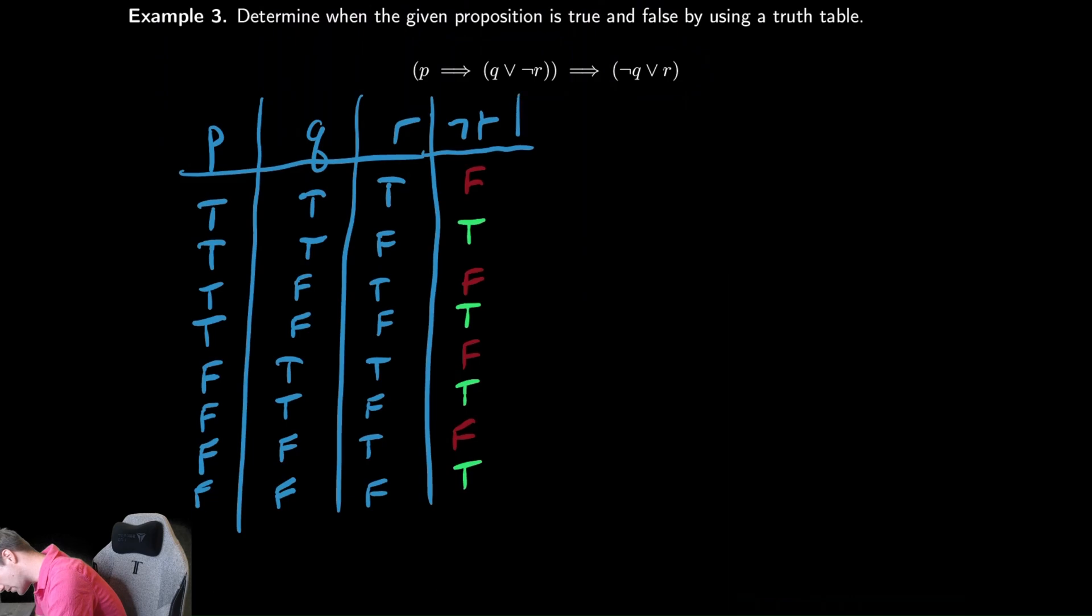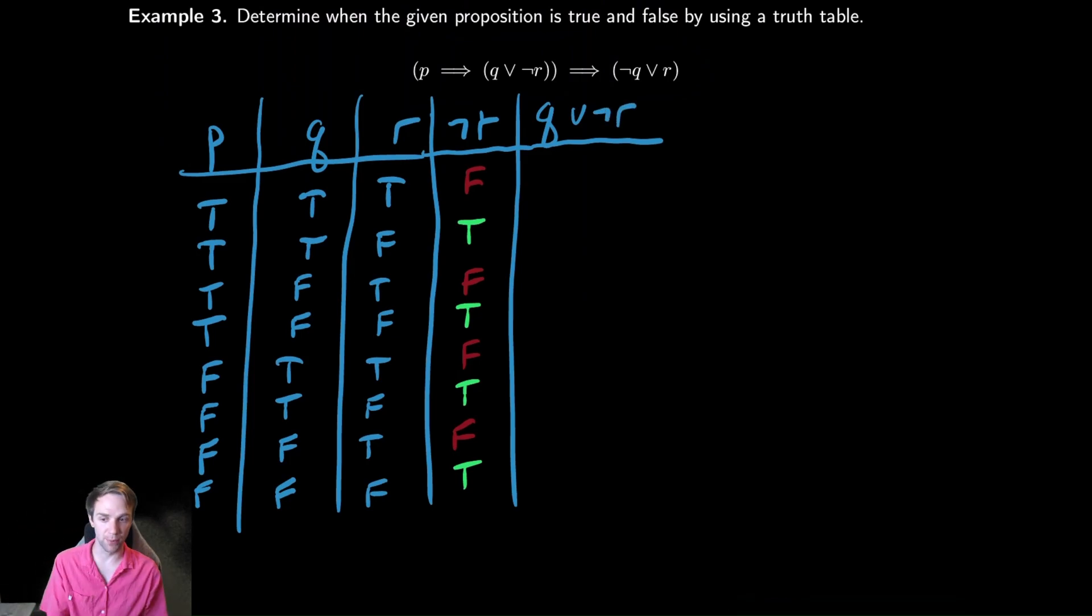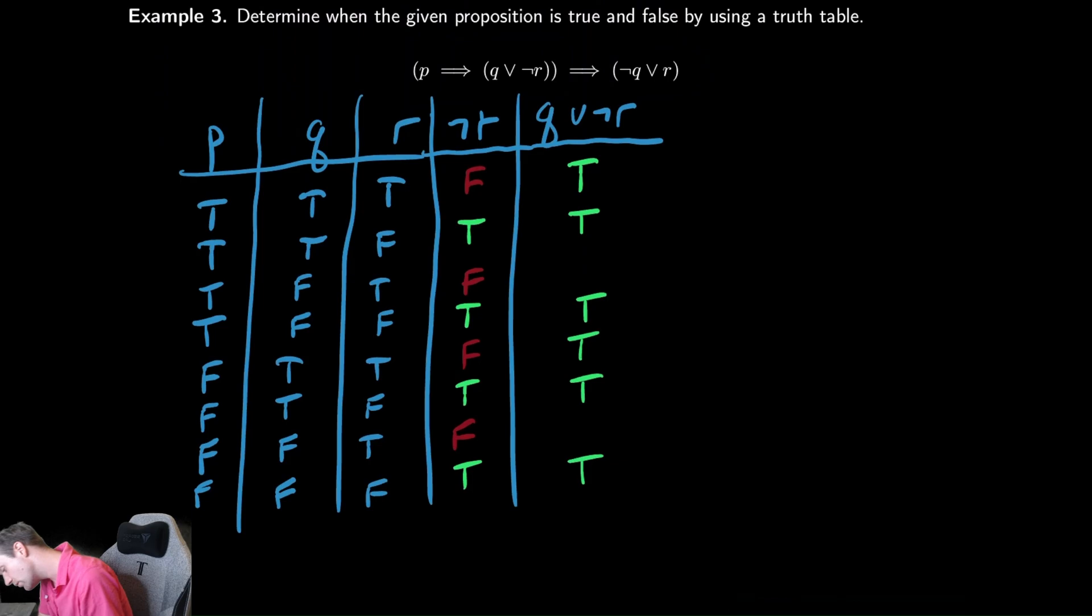And then we want to create another column that is Q or not R. There are two ways you can approach this. Earlier, we tried to look for a particular column where both were false. Another option would be to just look at all the ways they're true. Here we have that in all four of these rows, not R is true. And then let's look for all the places Q is true—it's true in the first row and the fifth row. Then I have two places where it is false.